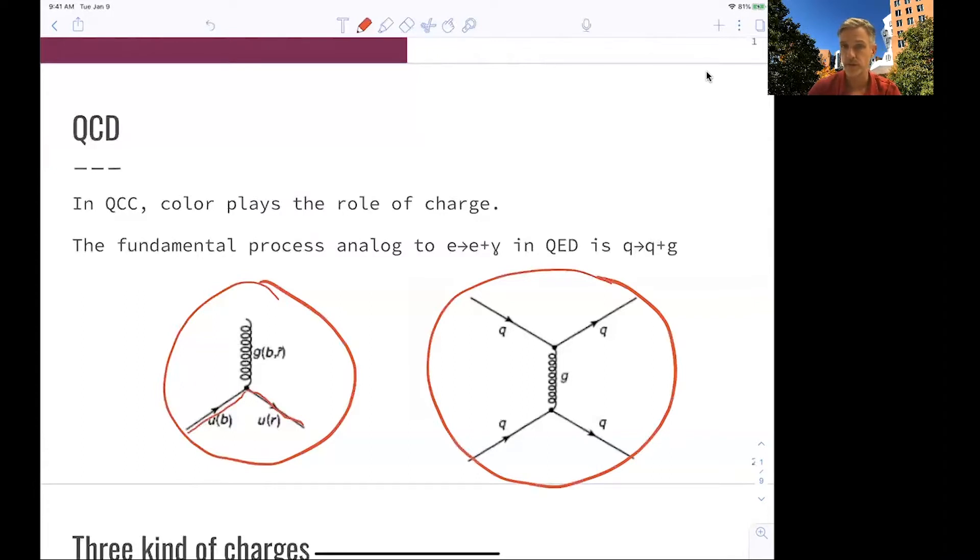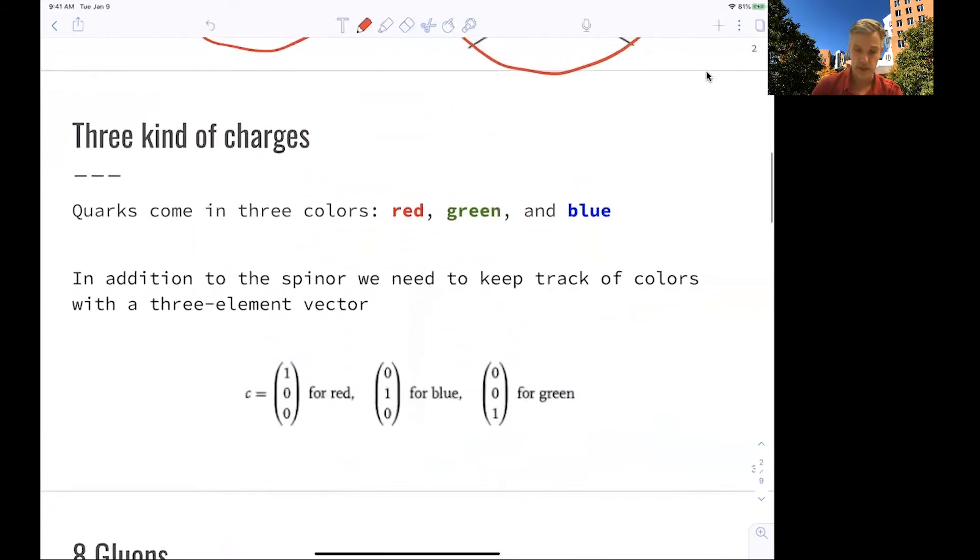for example, of two quarks through a gluon. So we have three kinds of charges, meaning that the quarks come in red, green, or blue. So we have to keep track of this when we write down our amplitudes, our matrix element.